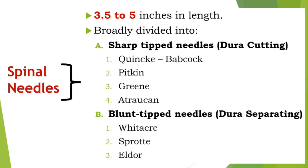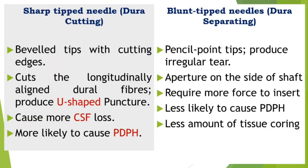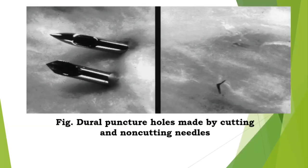Sharp tip needles have beveled tips with cutting edges, so they cut the longitudinally aligned dural fibers producing a U-shaped or V-shaped puncture. These sharp tip needles cause more CSF loss, which in turn will cause post-dural puncture headache (PDPH).